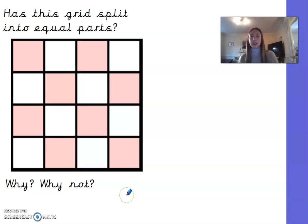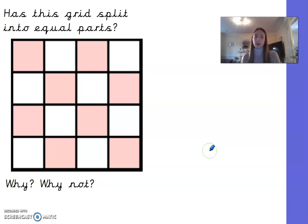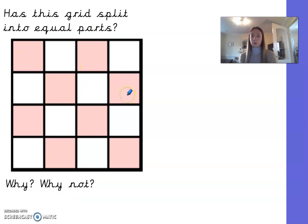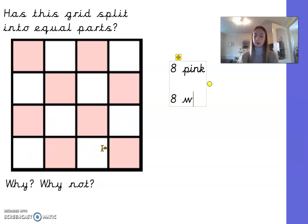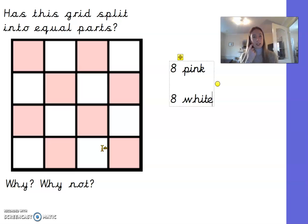Now look at this grid with some pink squares and some white squares. Do you think it has been split into equal parts and why? Let's count: there are eight pink squares and eight white squares. They are the same number, so they are equal — this grid has been split into equal parts.